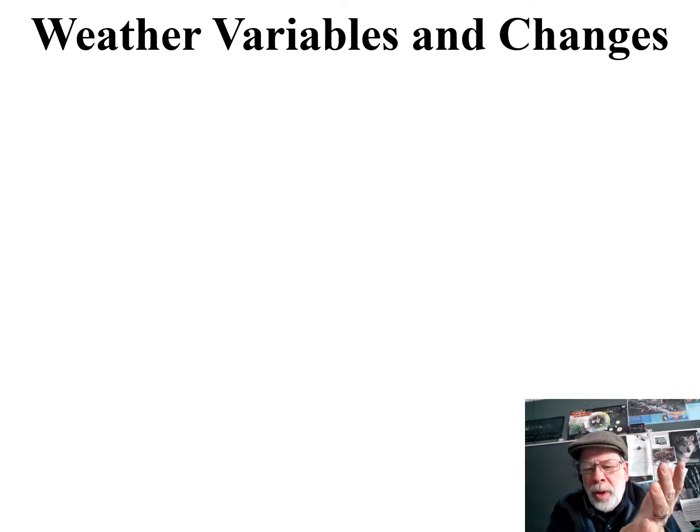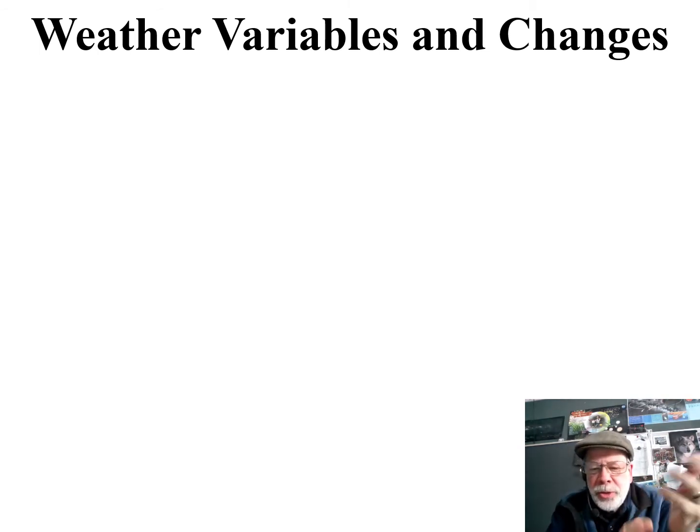Hey Earth Science Kids! This is chapter six, number four. This is all about weather variables and changes — in other words, how two different weather variables will affect each other. Some common weather variables are temperature, humidity, pressure, wind speed and direction, things like that. So how does a change in one affect the other?